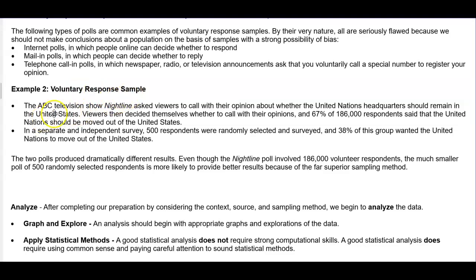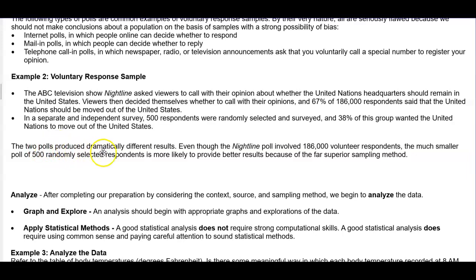Let's take a look at example two: Voluntary response sample. The ABC television show Nightline asks viewers to call with their opinion about whether the United Nations headquarters should remain in the United States. Viewers then decide themselves whether to call with their opinions, and 67% of 186,000 respondents said that the United Nations should be moved out of the United States. In a separate and independent survey, 500 respondents were randomly selected and surveyed, and 38% of this group wanted the United Nations to move out of the United States. You can see that the two polls produced dramatically different results.